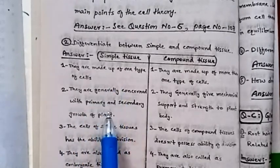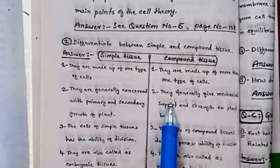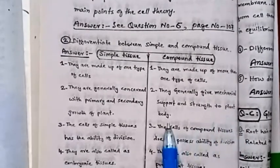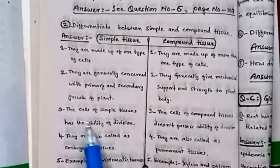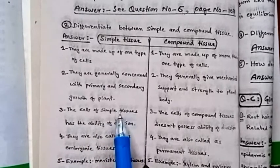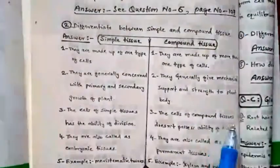They are created during primary or secondary growth of the plant body, whereas they generally give mechanical support and strength to the plant body. Third point: the cells of simple tissue have the ability of division.